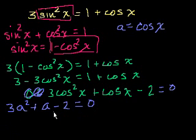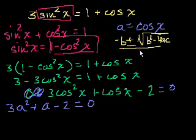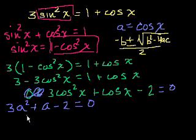Now we have a pure quadratic, and we can solve it using the quadratic formula. The quadratic formula is: negative b plus or minus the square root of b squared minus 4ac, all over 2a. In our equation 3d² + d − 2 = 0, the coefficient a is 3, b is 1, and c is minus 2.